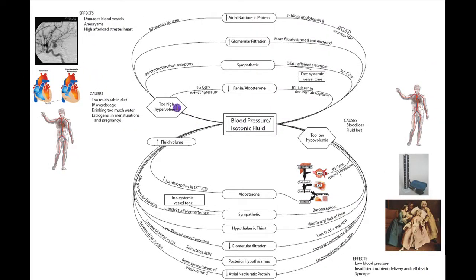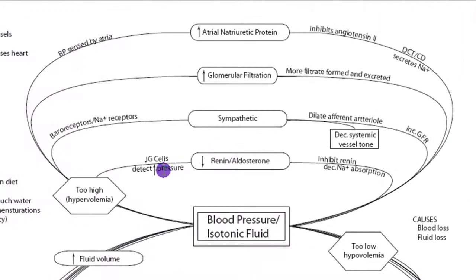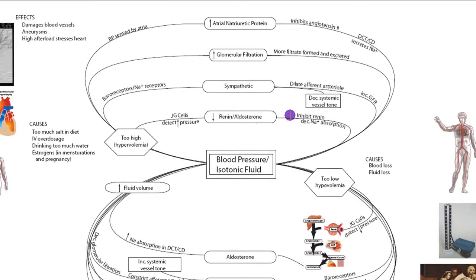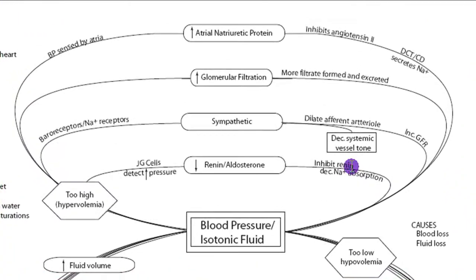The mechanisms to deal with hypervolemia are very similar but in the opposite direction to those that counter hypovolemia. The JG cells detect increased stretch, indicating increased blood pressure, and decrease renin-aldosterone. Inhibiting renin inhibits the entire cascade, so aldosterone production is inhibited. Less sodium is absorbed, and that brings fluid volume back down.